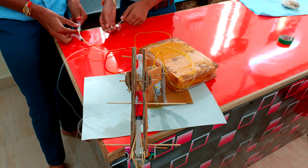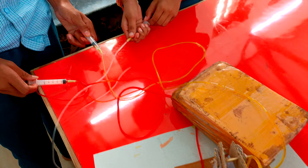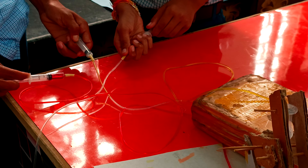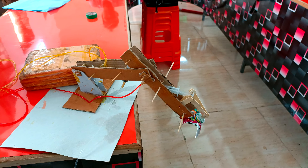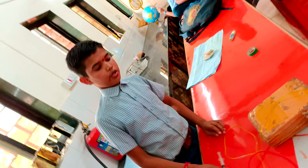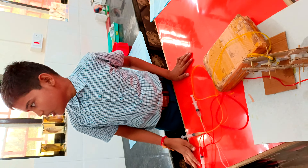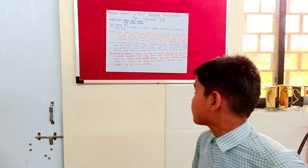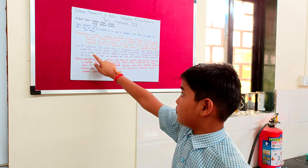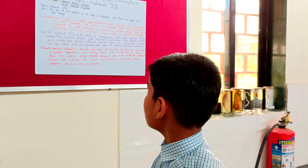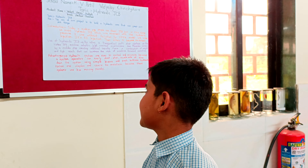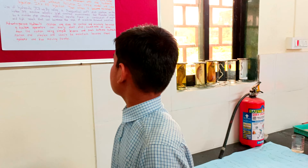Now we can see how it works. The materials used are some cardboard, six syringes, some toothpicks, and some ice cream sticks. We can see the use of a hydraulic JCB: by using a proportional soft-top system, the lift machine uses adaptive load control, which overcomes problems caused by a sudden stop by managing inertia from a combination of weight and high reach.